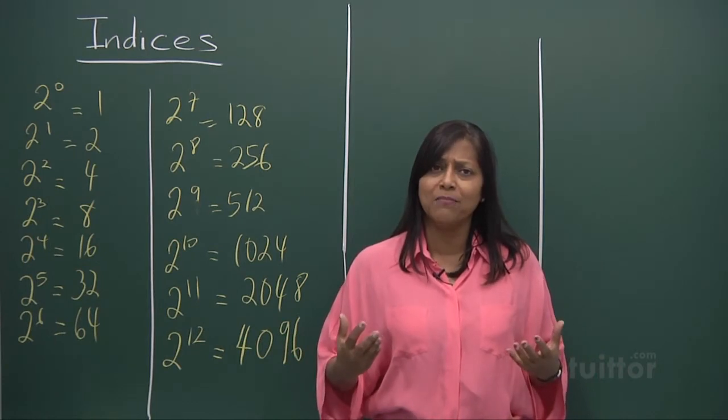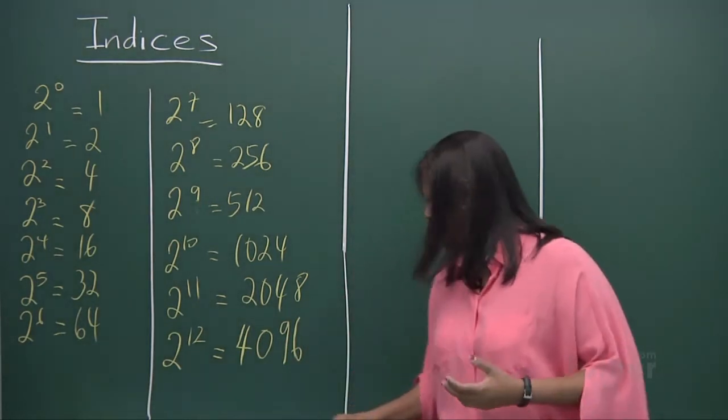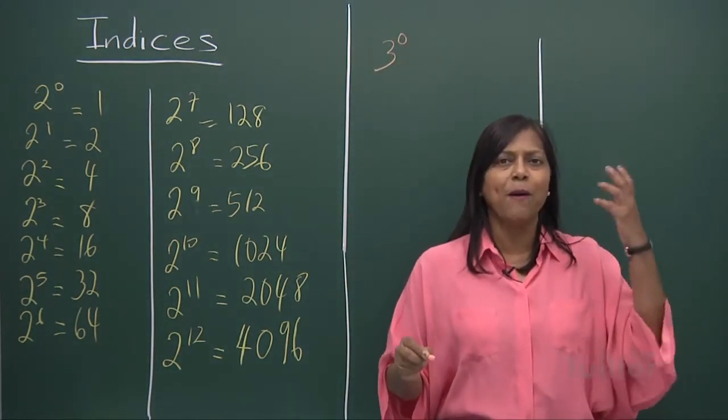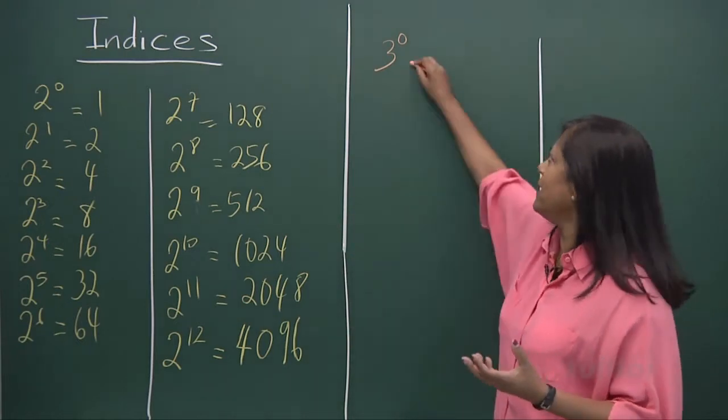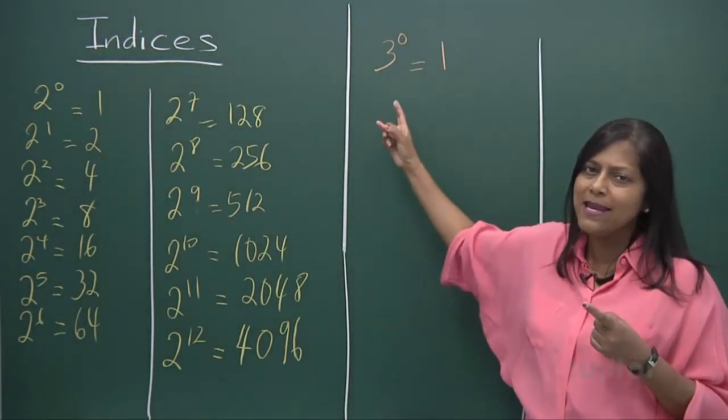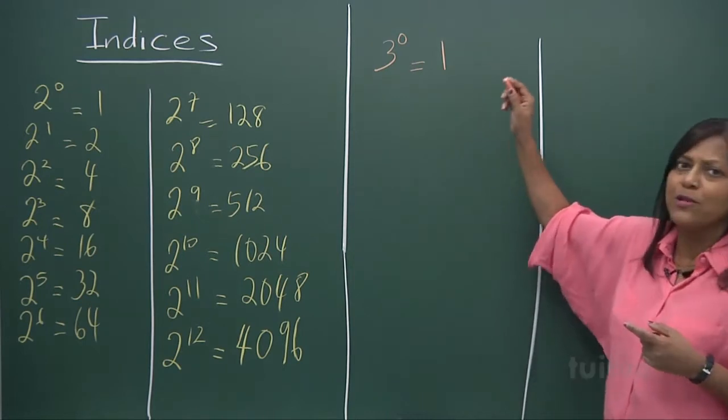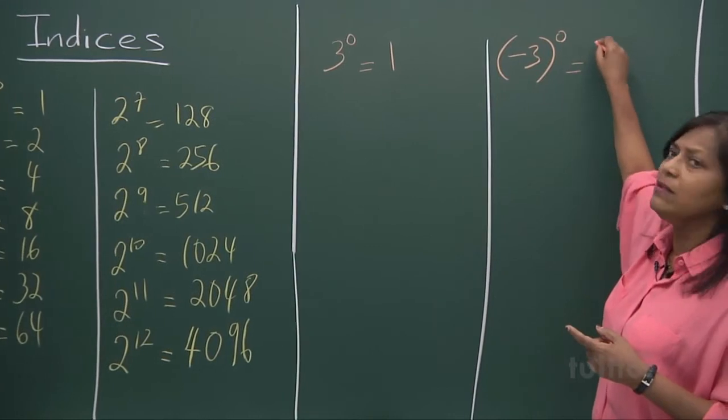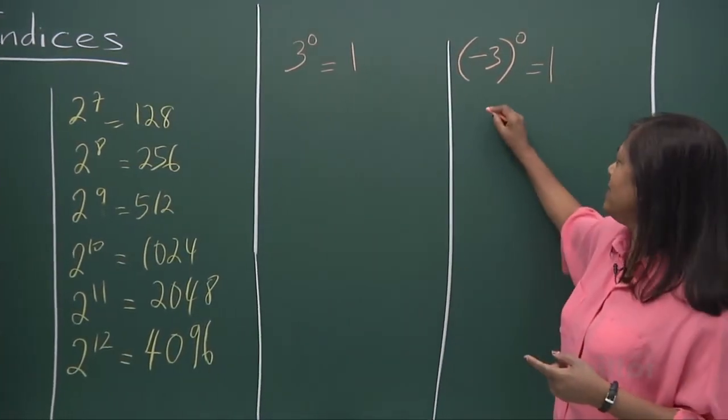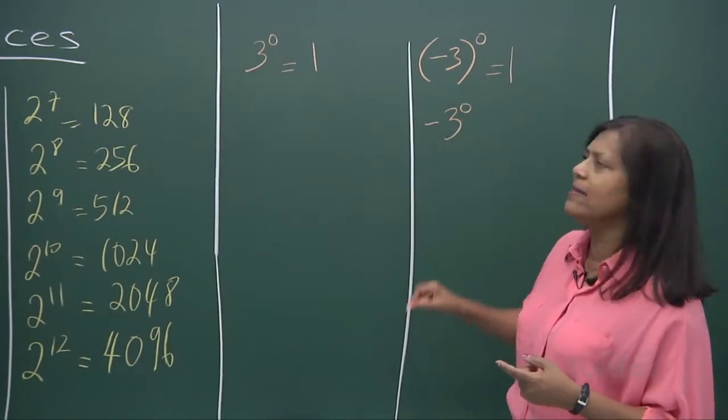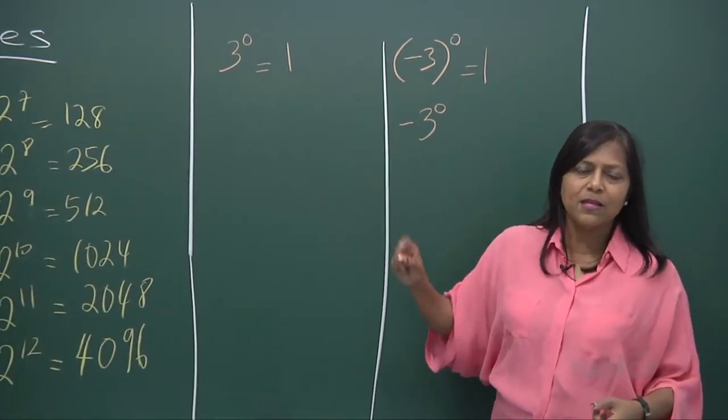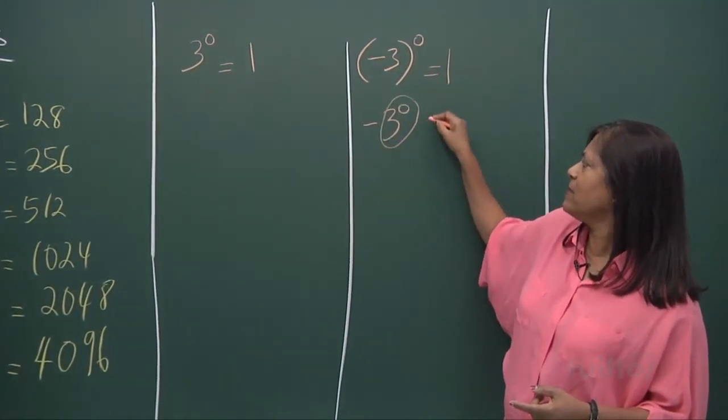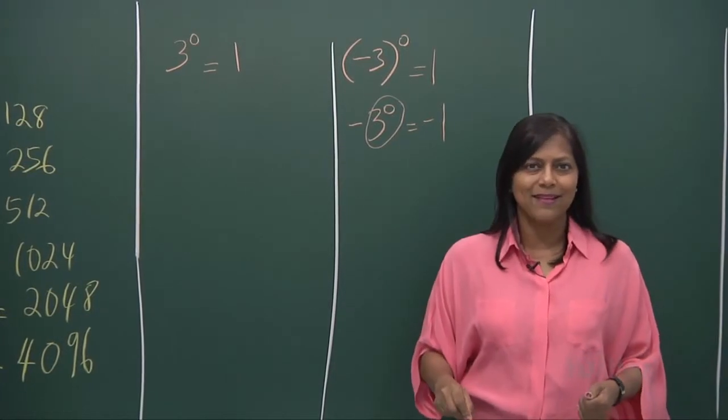Let's go on to other numbers like 3. Now, if you look at 3, the table 3, any number to the power of 0 is a 1. Any number. Even if it's going to be a minus 3 to the power of 0, you still get a 1. If it is minus, and if you write it this way, the power 0 is only meant for the 3. So you get a minus 1. Alright?